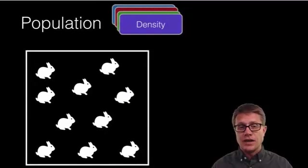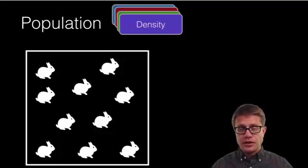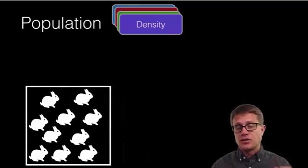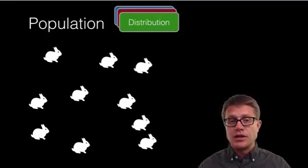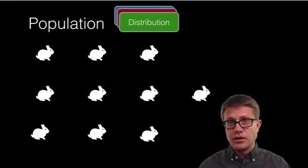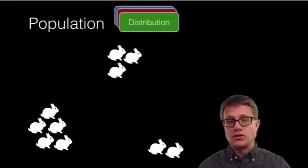Density is also important—that's the number of individuals we have in a given area. We could call this one density, but we'd call this greater density. We could also look at their distribution. I would say these rabbits are now randomly distributed, but they could be distributed uniformly or clumped in their distribution.